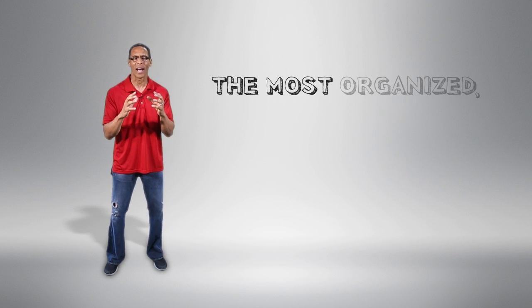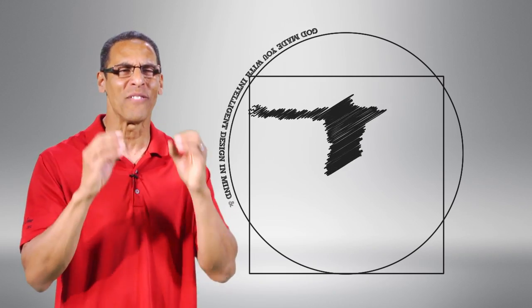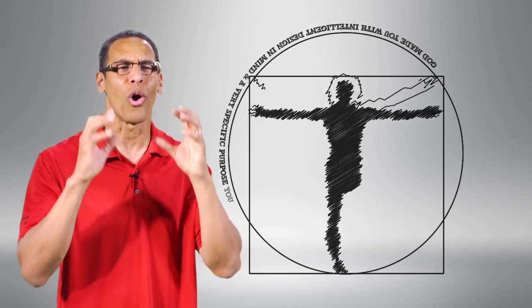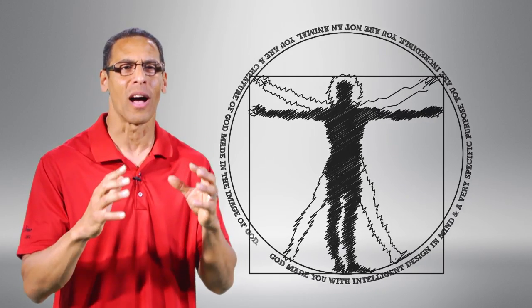And the most organized, complex thing is you. God made you with intelligent design in mind and a very specific purpose. You are incredible. You are not an animal. You are a creature of God made in the image of God.